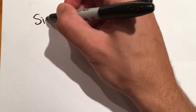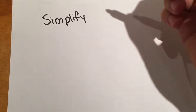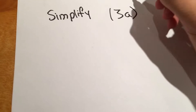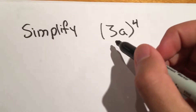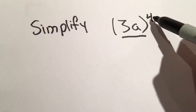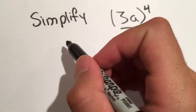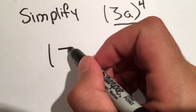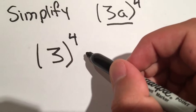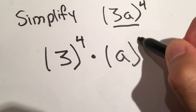We are going to simplify 3a to the 4th power. Because this is all one term here, we are just going to distribute this exponent to each term. For example, we take 3, raise it to the 4th power, and then we are going to multiply that by a raised to the 4th power.